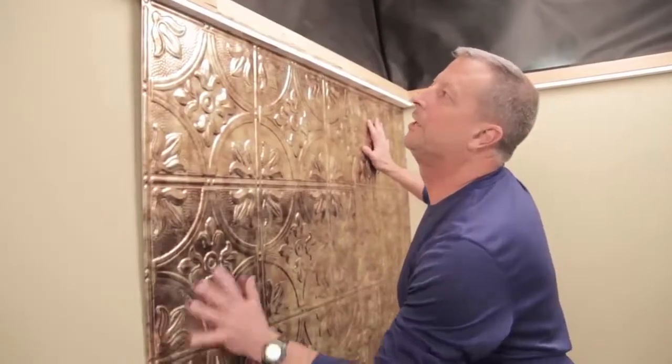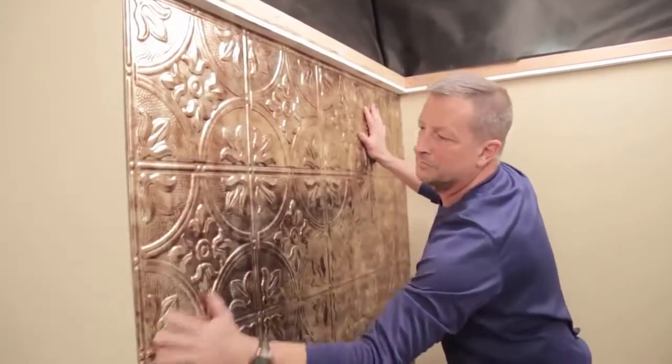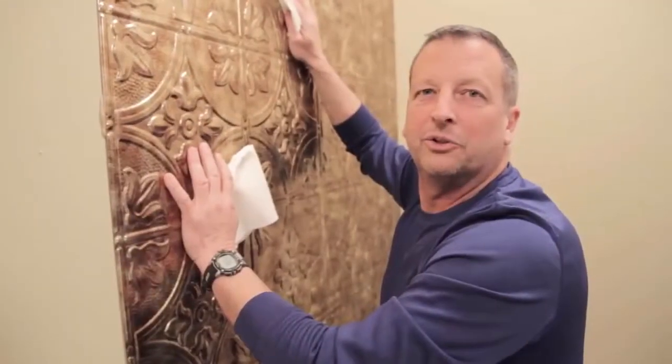Place the panel and smooth it into the glue with your hands. Wipe off any excess glue with a damp cloth.